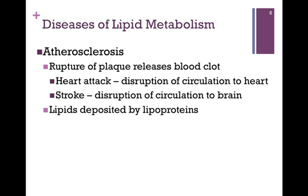Not only is there a problem with restricted blood flow, and therefore probably a problem with blood pressure, but the greater problem is when that plaque ruptures — it releases a clot. If that clot proceeds to the heart and disrupts circulation there, the result is a heart attack. If it proceeds to disrupt circulation to the brain, we have a stroke. So considering all the heart attacks and strokes in the U.S. associated with atherosclerosis, we can see why about half of all deaths are related to this one particular disease.